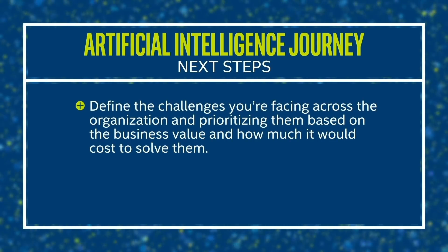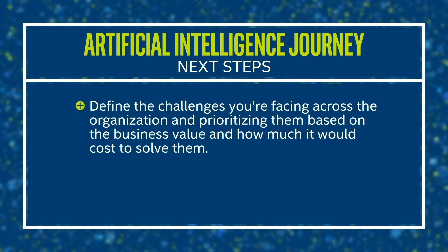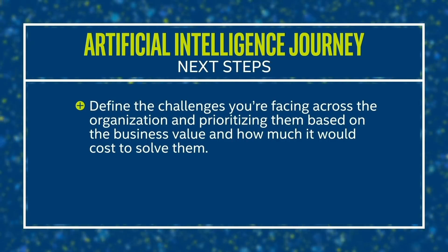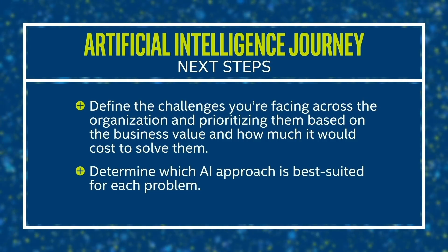Apart from having a solid data strategy, your first step should be to define the challenges you're facing across the organization and prioritizing them based on the business value and how much it would cost to solve them. The next steps are to determine which AI approach is best suited to each problem. There are a few more steps you will have to consider and analyze, but the bottom line is, if you think about all these steps in the AI lifecycle, you'll stand a much better chance of realizing the business value that you originally set out to deliver.